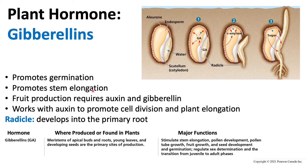Another thing gibberellins are responsible for is stem elongation. The initial radicle begins to elongate, reaching above ground, and then more auxin and cytokinin come in for further growth. Gibberellins are also required for fruit production, but auxin is also required for fruit production, as auxin is a very important hormone for plant growth overall.